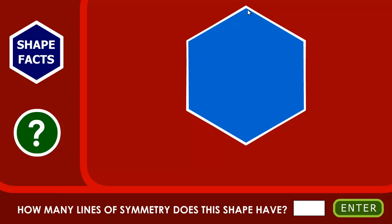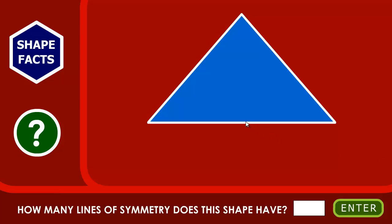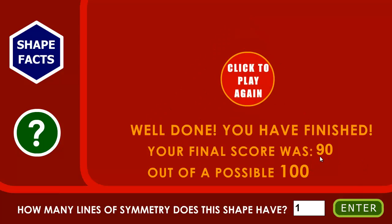The next shape — this is a hexagon. Let's fold it at the vertex first: one, two, three. We can fold it three ways at the vertex. And if we fold it in the middle, then one, two, three — three and three is six. We can fold a regular hexagon six ways. This is a rectangle. We can fold it here — one, two — two lines of symmetry. This looks like an isosceles triangle, so we fold it only once because the height bisects the two sides. Great job! My final score is 90 out of 100. Not bad.